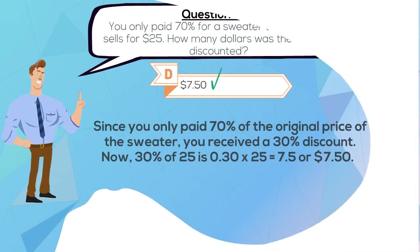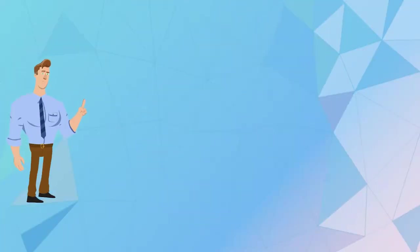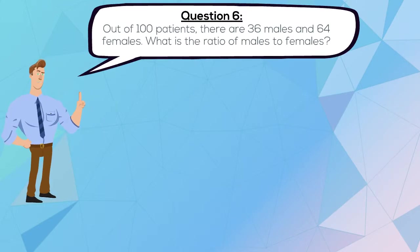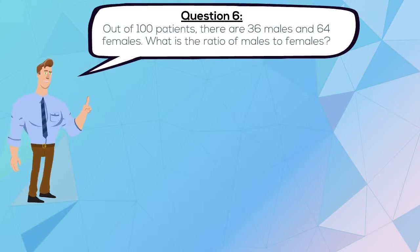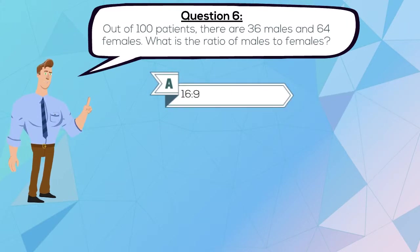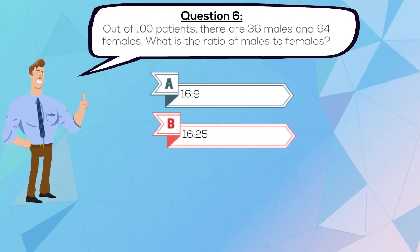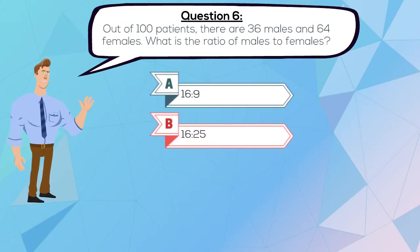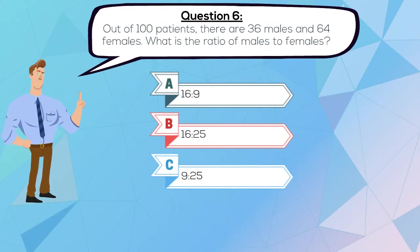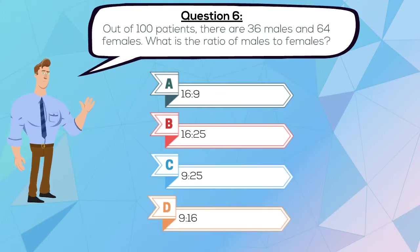Question 6. Out of 100 patients, there are 36 males and 64 females. What is the ratio of males to females? A. 16:9, B. 16:25, C. 9:25, or D. 9:16.